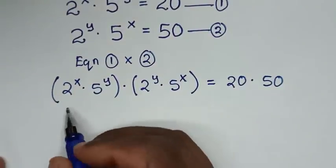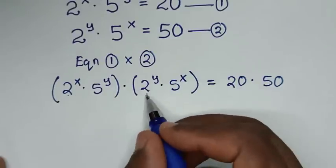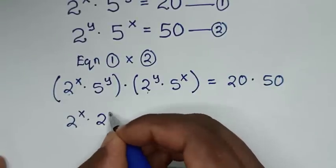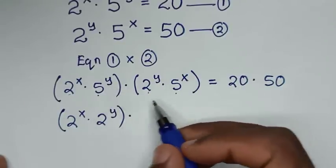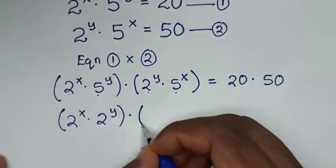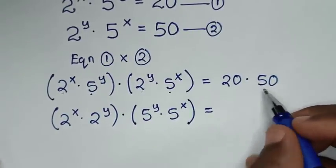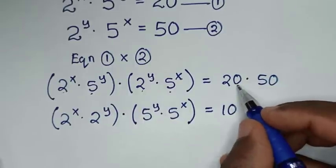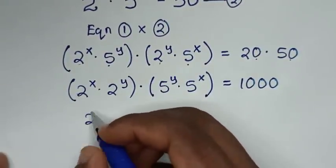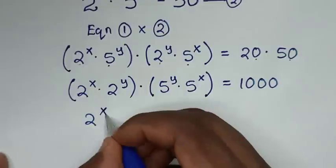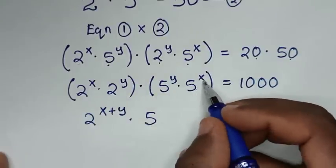In the next step, on the left side we group the exponents with the same base. We put 2 power of x times 2 power of y together, and 5 power of y times 5 power of x together. Then, multiplying exponents with the same base, we add the powers: 2 power of (x plus y) times 5 power of (x plus y).